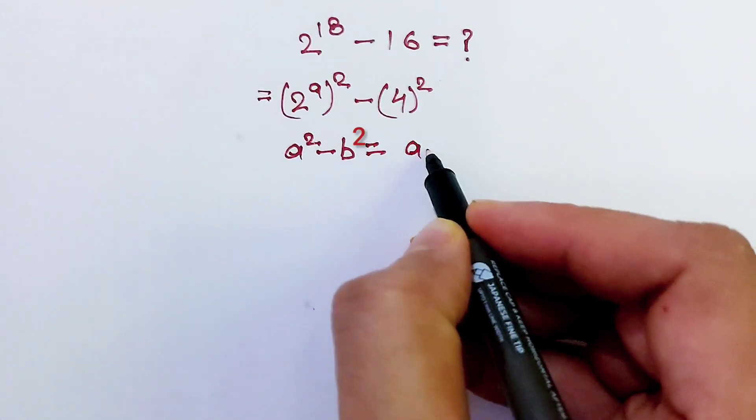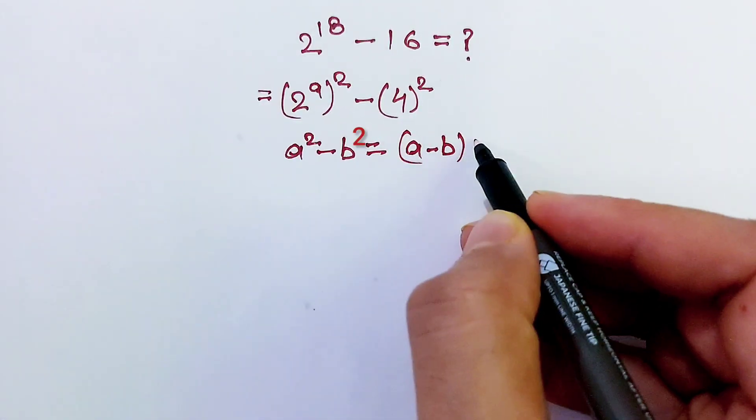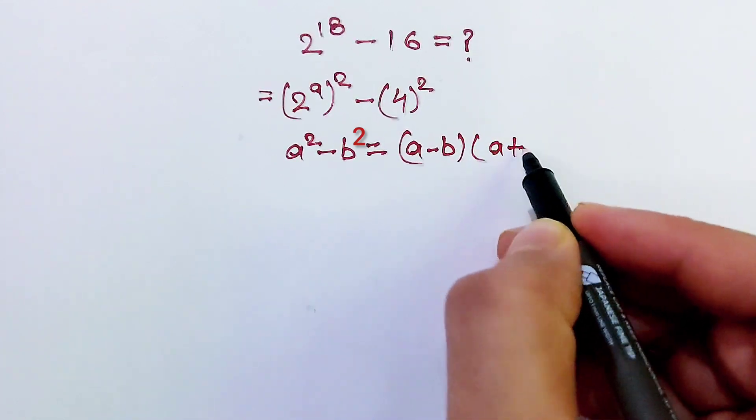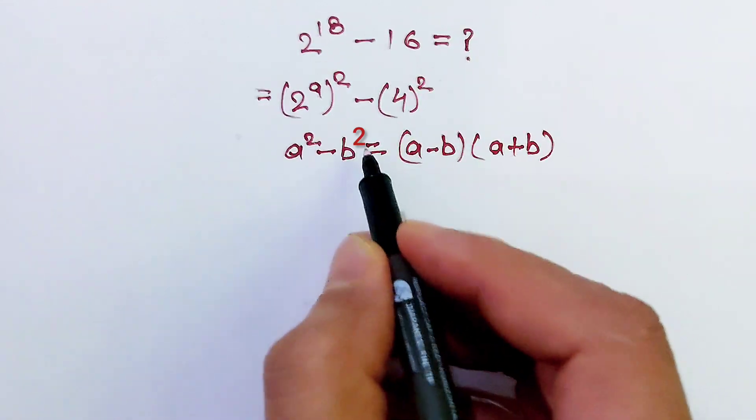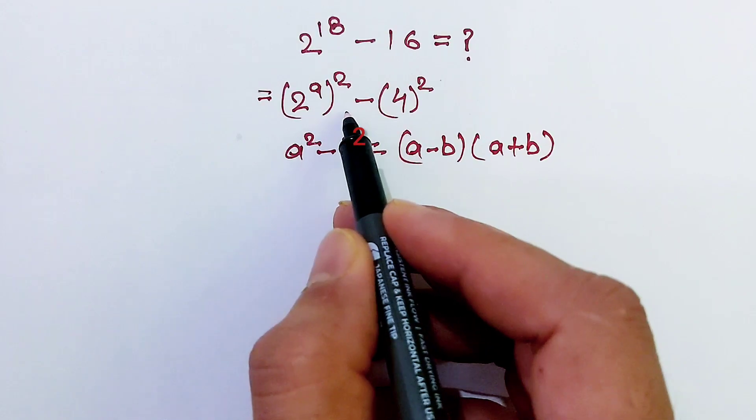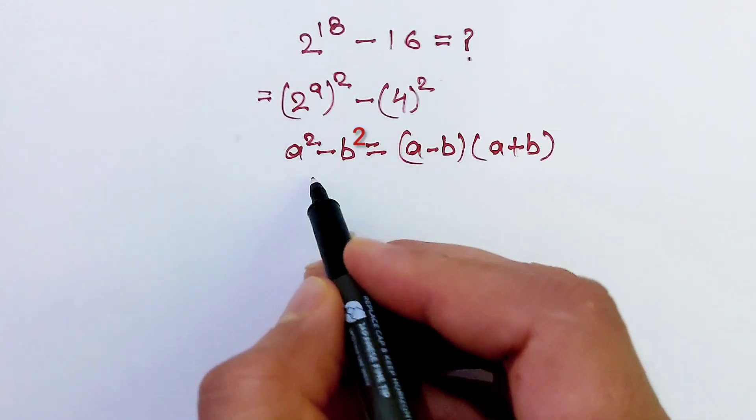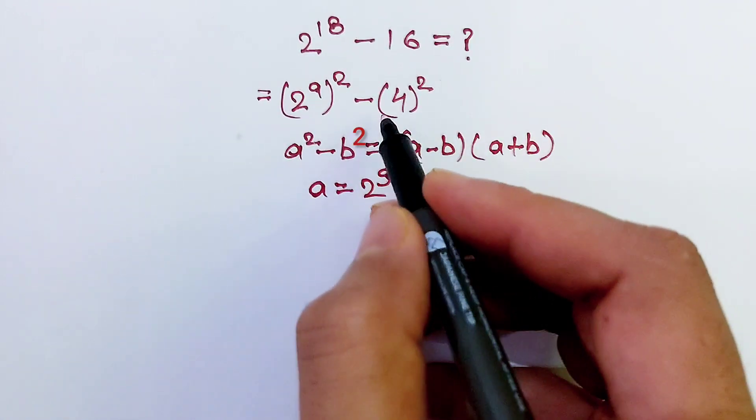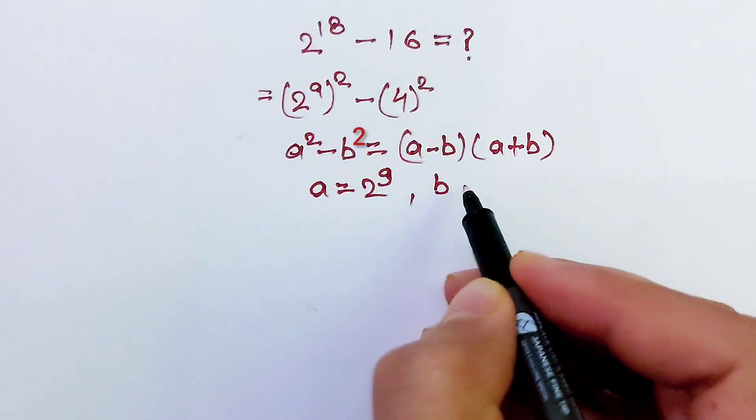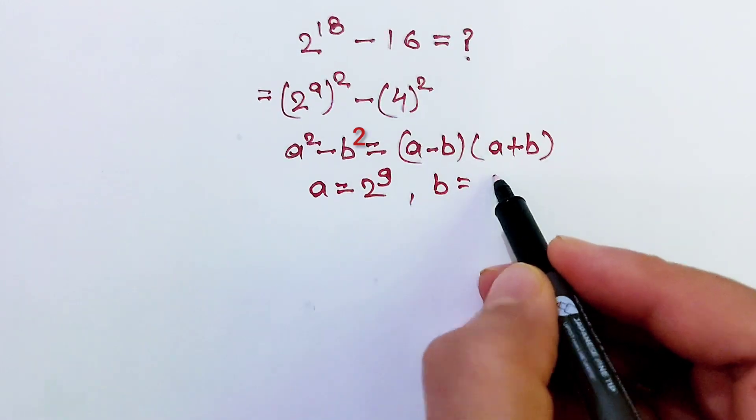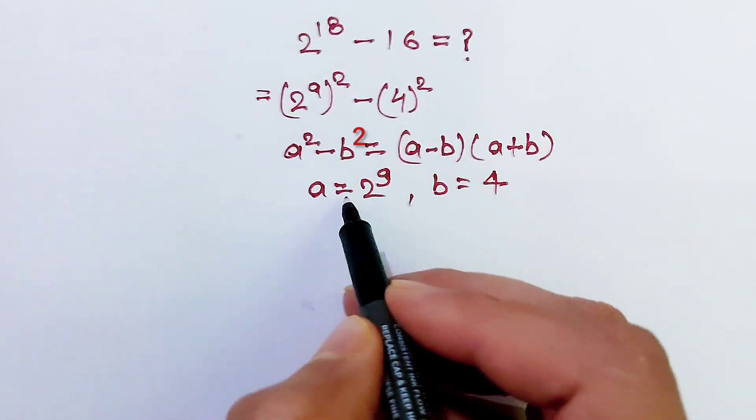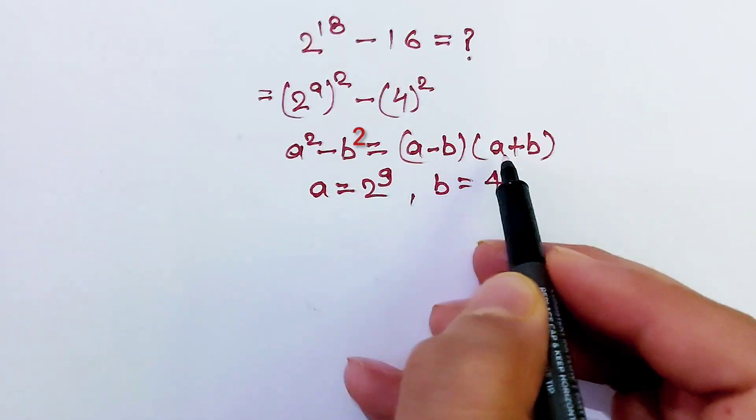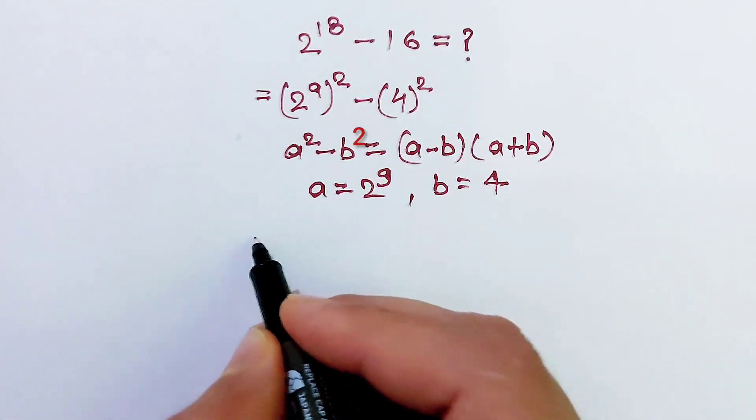a minus b times a plus b. If we compare this formula with this identity we will find that here a is 2 power 9 and b is equal to 4. Then we put this value in this formula here.